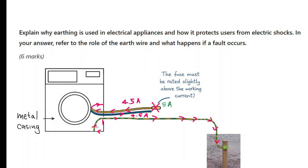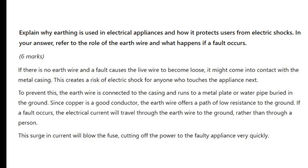So let me give you an answer for this question as a model answer. This is what you can write as the answer. If there is no earth wire and a fault causes the live wire to become loose, it might come into contact with the metal casing. This creates a risk of electric shock for anyone who touches the appliance.